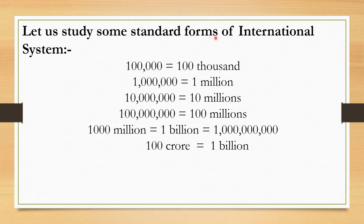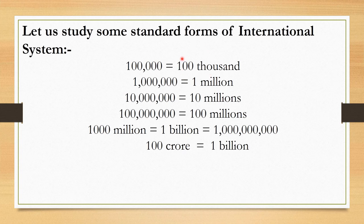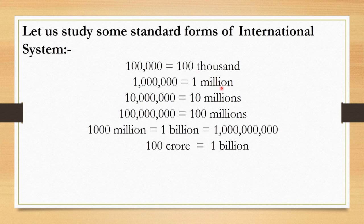Let us study some standard forms of the international system. One lakh in the Indian system corresponds to the number 1,00,000. Ten lakh equals one million in the international system. One crore equals ten millions. Ten crore equals one hundred millions.